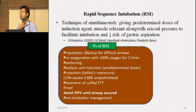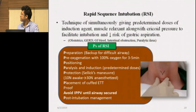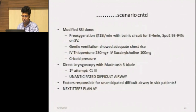For RSI, always give sedation — commonly short-acting agents — and a muscle relaxant such as succinylcholine or rocuronium. Everything must be prepared beforehand, and cricoid pressure is applied to prevent gastric aspiration. RSI is also used in pregnant patients and abdominal cases.